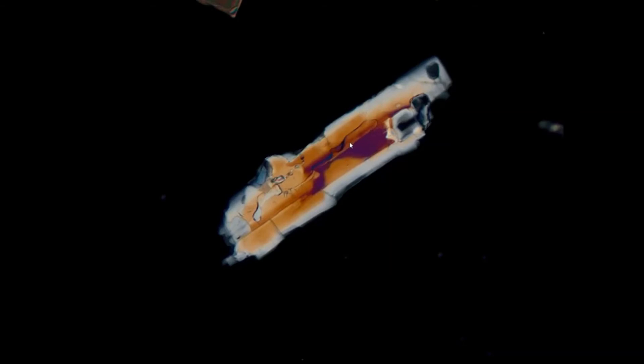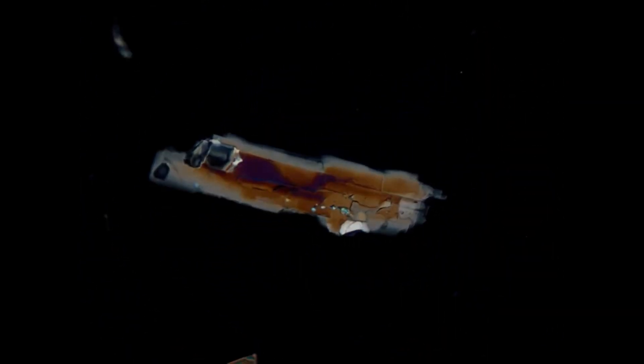If we rotate the grain under cross-polarized light, we can see that it has inclined extinction, because it is non-extinct when it's oriented in a north-south direction. This grain has a rather large extinction angle, in this case around 30 degrees.